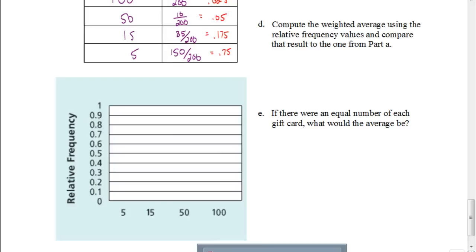So along the bottom here, this is referring to the card value. The $5 gift card has a relative frequency of 0.75. So we're going to estimate 0.75 to be right about here and create a bar for that. For our $15 gift card, that's got a relative frequency of 0.175. So here's 0.1, here's 0.2. So 0.175 is going to be about three quarters of the way up. Our $50 gift card has a relative frequency of 0.05, which is halfway between 0 and 0.1. And lastly, our $100 gift card has a relative frequency of 0.025, which is going to be just barely above 0 there. So that's what our relative frequency graph would look like.